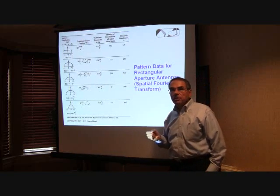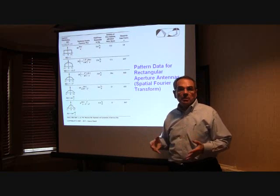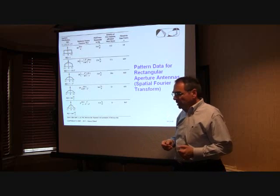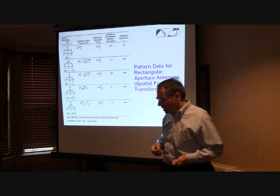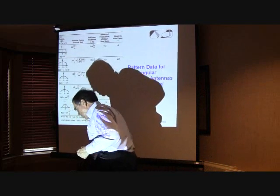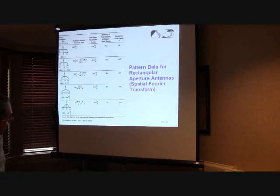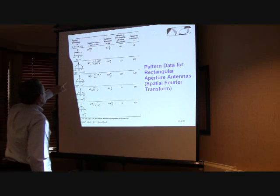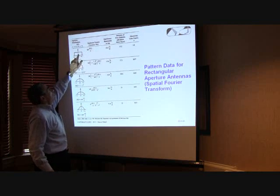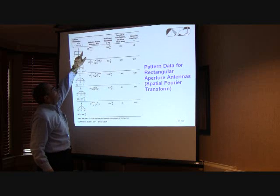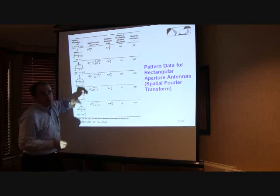I mentioned about how the feed horn illuminates the main reflector, and there are trade-offs in how that illumination is accomplished. If we had the most perfect type of illumination, that would be what we call uniform, illustrated by this square wave right here. This is illumination by the feed horn of the reflector, which is constant until it reaches the edges and drops to zero.